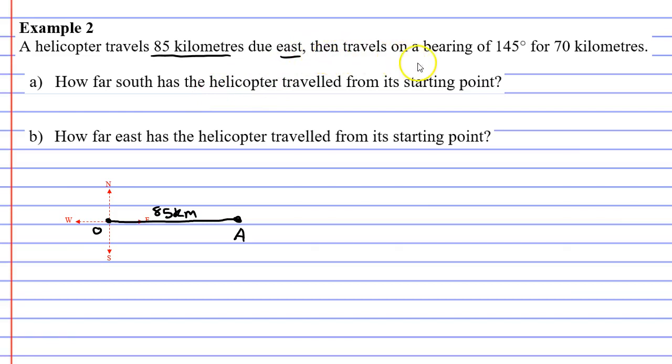Now, it then travels on a bearing of 145 degrees. What's really important is we need to understand that our compass moves with the helicopter. So the helicopter is now at point A, so the compass needs to now move to that point. And we want to travel on a bearing of 145 degrees for 70 kilometers. 145 is the same as saying 90 plus 55. The reason I'm doing that is because east is 90 degrees and we need to add on an extra 55. So we need to add on 55 degrees to get our bearing.